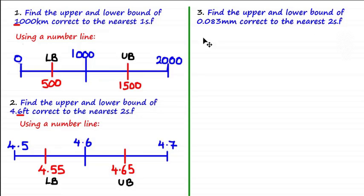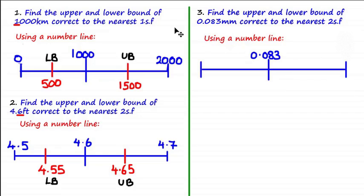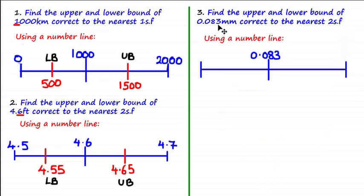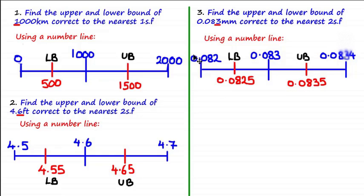Find the upper and lower bound of 0.083 millimeters correct to the nearest two significant figures. Using the number line with 0.083 in the center, we must be careful: the first significant figure is 8 and the second significant figure is 3 — it does not start from the leading zeros. Adding 1 gives 0.084 and subtracting 1 gives 0.082. Taking the midpoints gives a lower bound of 0.0825 and an upper bound of 0.0835.